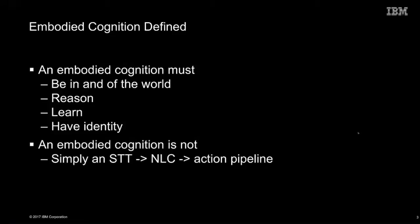I want to distinguish some things here. I've got an Alexa on my desk, Siri on my phone, Cortana on a PC. These are certainly cognitive assistants, but in their current form they're largely request-response AIs. If you study their architecture, it's largely speech-to-text, followed by a natural language classifier, followed by an action pipeline. Amazon's Alexa has codified that through what they call skills. Those are interesting, powerful, useful things — but they're not enough. We're speaking of embodied cognitions that go beyond that.